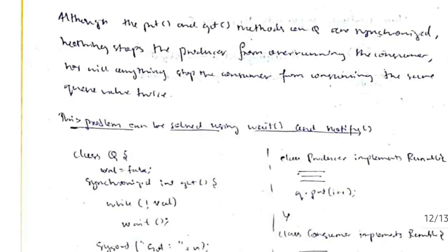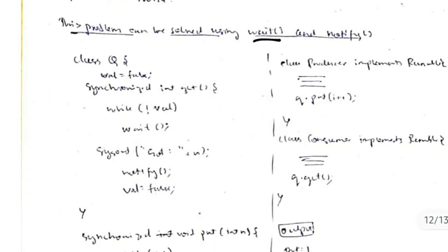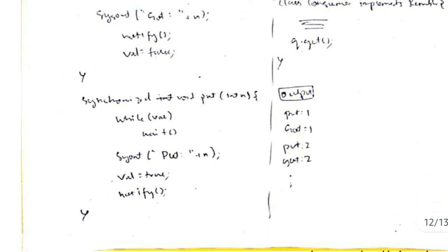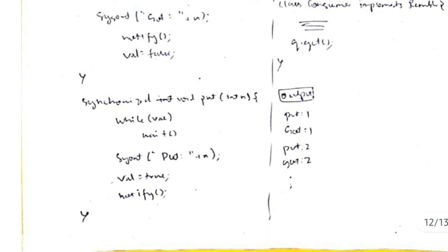To solve this, we use two functions: wait and notify. In each function, when producing a good the wait function is called, and after producing the notify function is called. Notify informs the consumer that the good has been produced, so the consumer then retrieves it, giving the correct output.